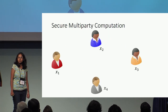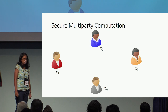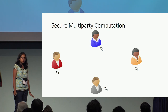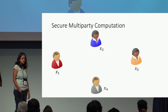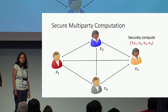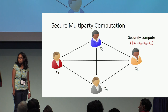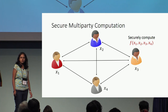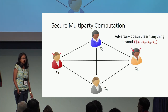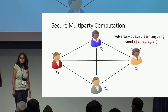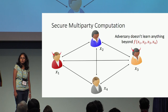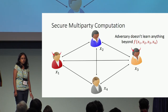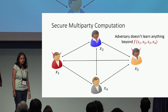Let me start by describing the setting of a multi-party computation. We have a group of parties, each with their private individual inputs, and they wish to securely compute a joint function over these inputs. Securely computing a function essentially means that an adversary who can corrupt a subset of these parties should not be able to learn anything about the inputs of the honest parties beyond what is already revealed by the output of the function.